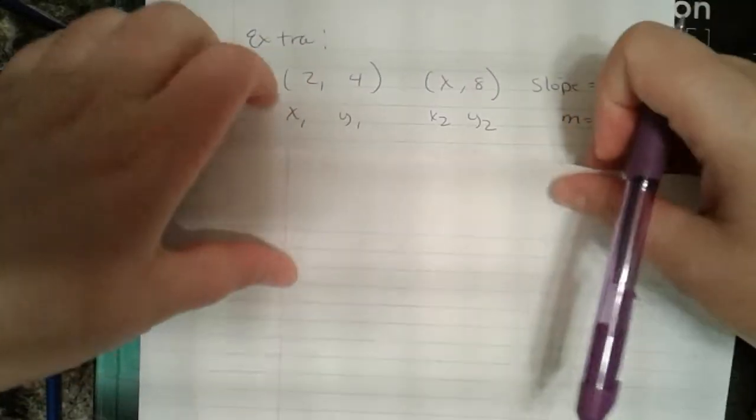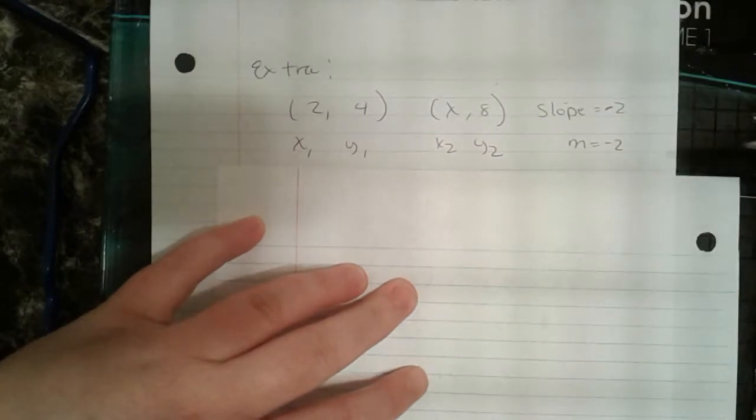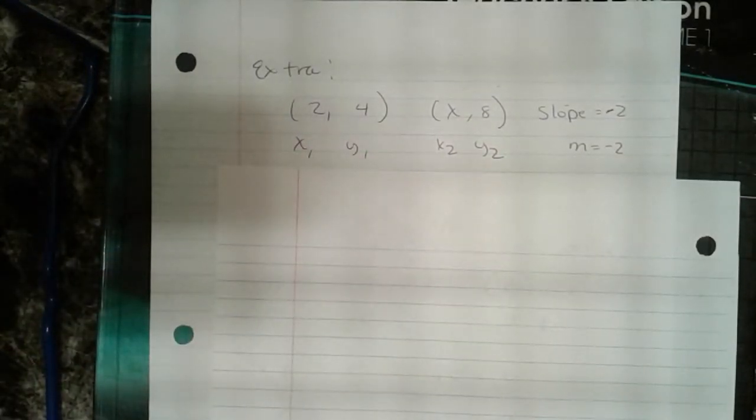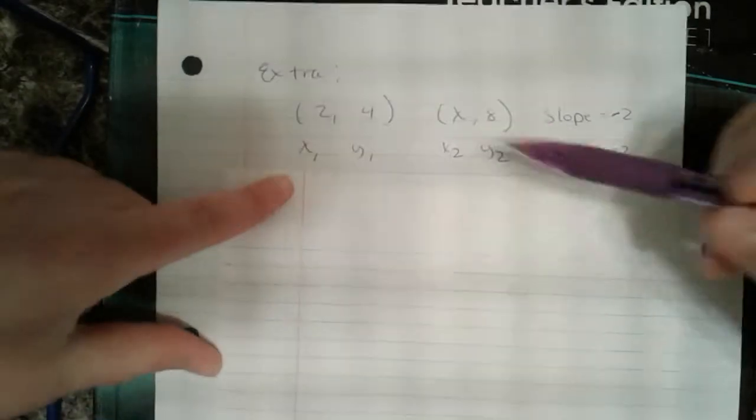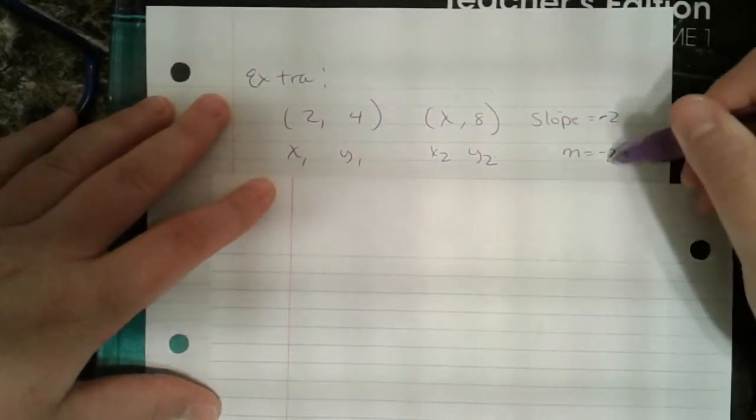We have label our things because to me that is the biggest part of this. If I can label my order pairs, label what I know, then I'm going to be able to stay organized. So I have x1, y1, x2, y2, m equals negative 2.